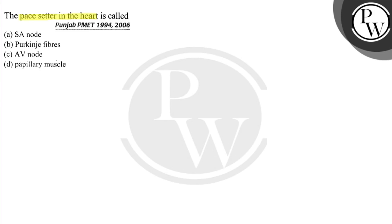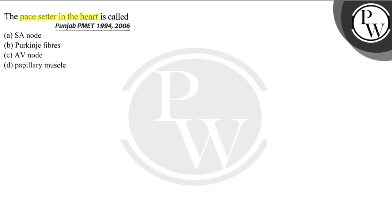The pacemaker in the heart is called: A. SA node, B. Purkinje fiber, C. AV node, D. papillary muscle.